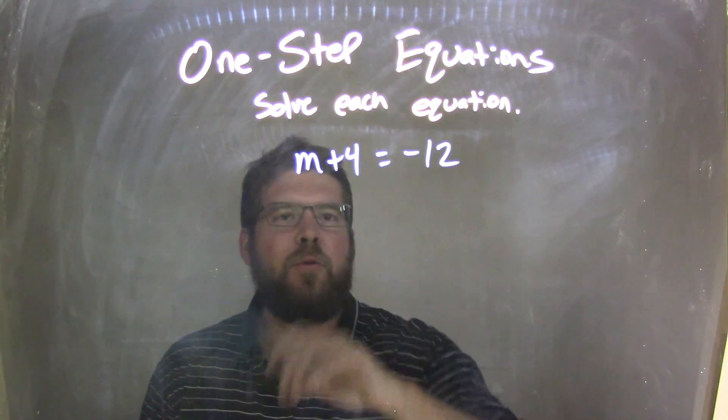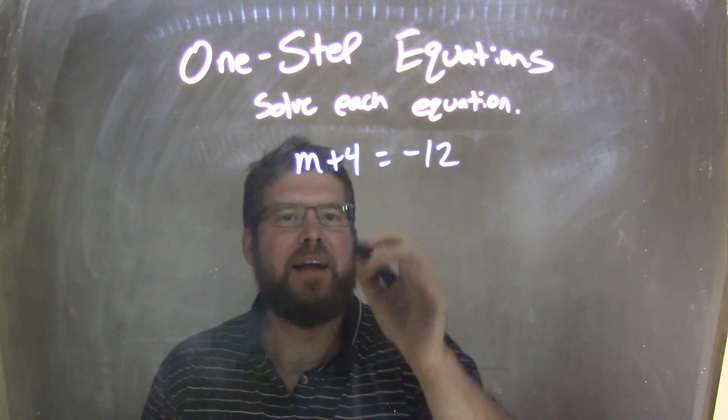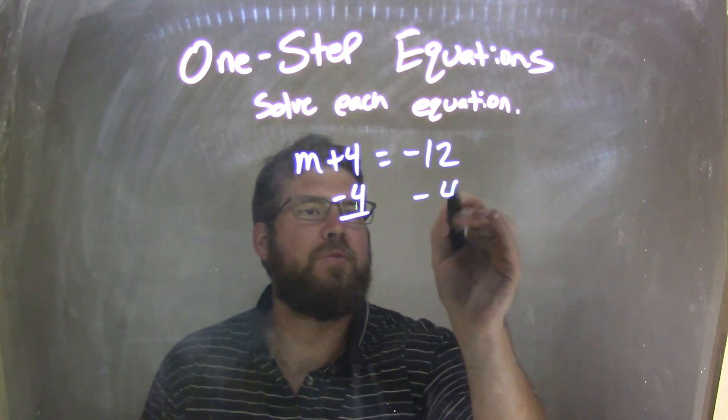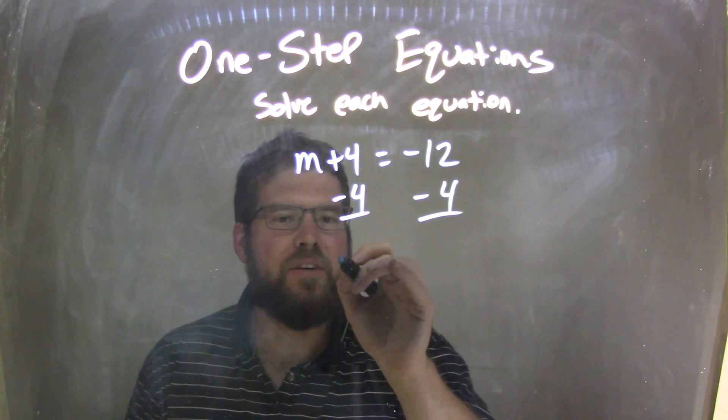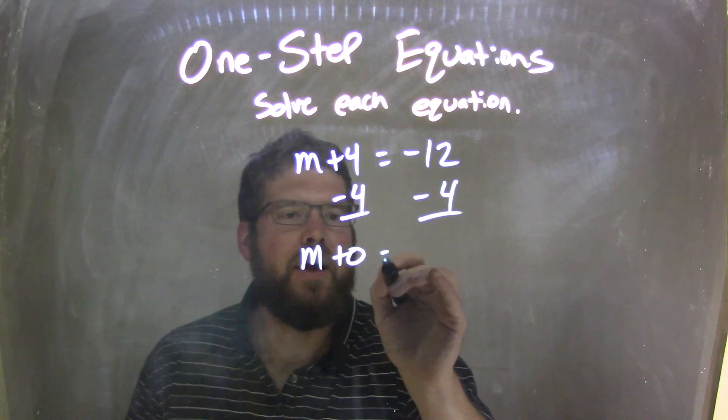Opposite of adding a 4 is subtracting, right? Subtracting a 4, minus 4. So we subtract a 4 to both sides. Plus 4 minus 4 comes out to be 0, so we have a 0 here and the m there.